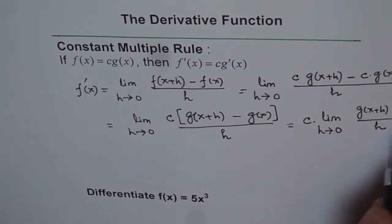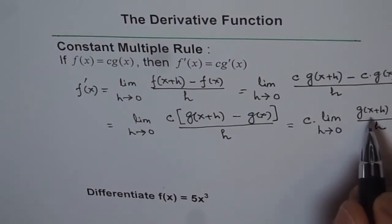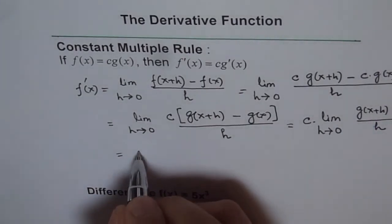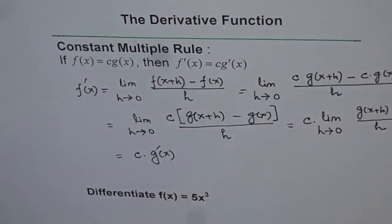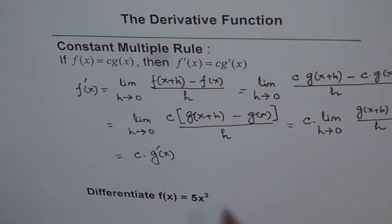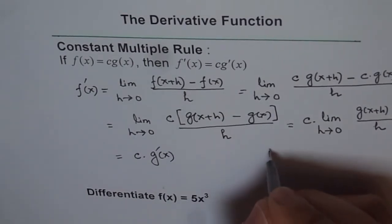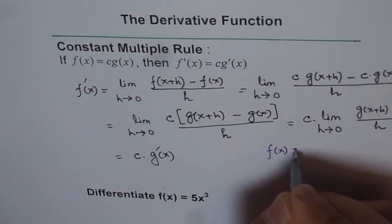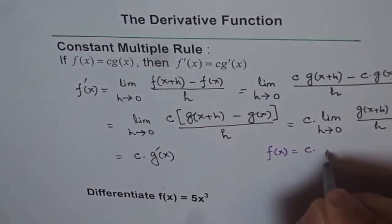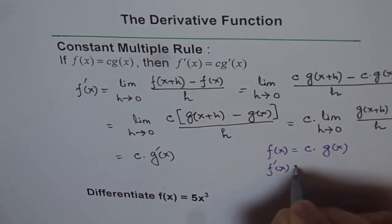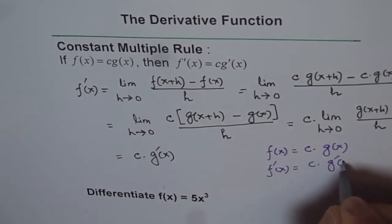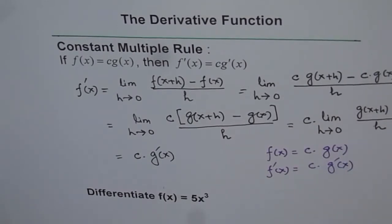Now, what is this? This is the derivative of g of x. So we can write this as equals to c times the derivative of the other function g of x. That is how we can derive this rule, and therefore we have a rule: if our function f of x equals any constant c times another function, then the derivative of this function equals c times the derivative of the other function. That is the rule.